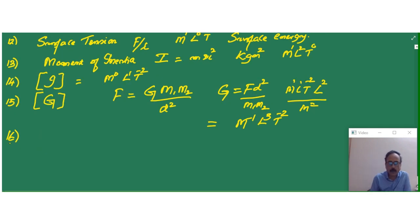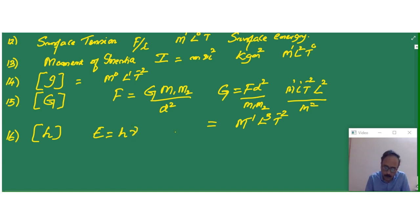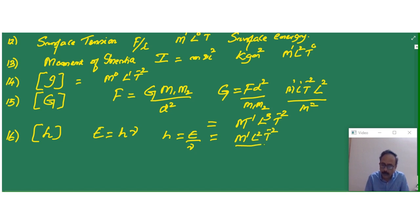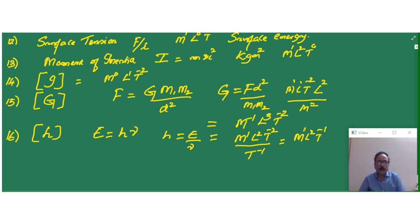Now let us write the dimensional formula for Planck's constant H. We know the relation energy equals Planck's constant times frequency. Therefore Planck's constant is E divided by nu. The dimensional formula for energy is M L2 T-2 and frequency is T-1. If T-1 goes to the top, it becomes M L2 T-1. Like that, we can write the dimensions for any physical quantity if you know the formula.